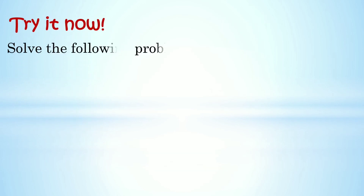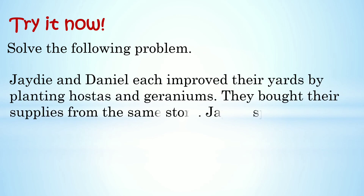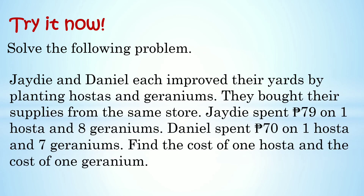Try it now — solve the following problem: JD and Danielle each improve their yards by planting hostas and geraniums. They both buy supplies from the same store. JD spent 79 pesos on one hosta and 8 geraniums. Danielle spent 70 pesos on one hosta and 7 geraniums. Find the cost of one hosta and the cost of one geranium. Pwede kayong gumamit ng kahit anong method — elimination, substitution, or graphing.